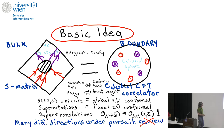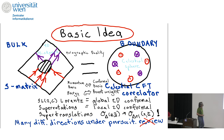In this holographic dictionary, instead of working in an energy-momentum basis, we work in a boost weight basis. Since the Lorentz group SO(3,1) is SL(2,C), which is the conformal group acting as the conformal group on the two-sphere, that corresponds to working in a conformal basis. So SL(2,C) Lorentz becomes the global 2D conformal group acting on the celestial sphere.